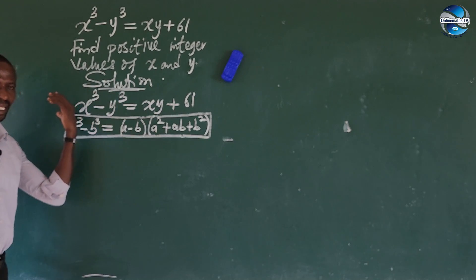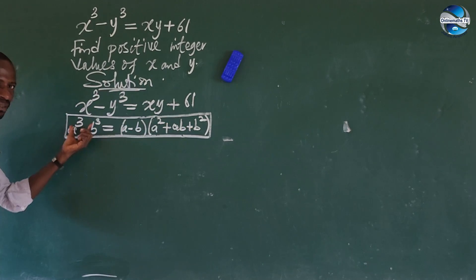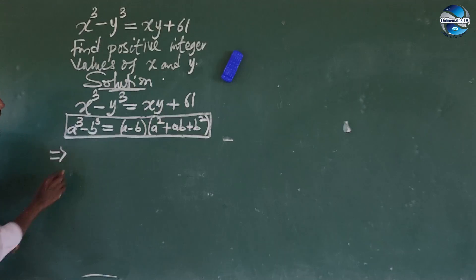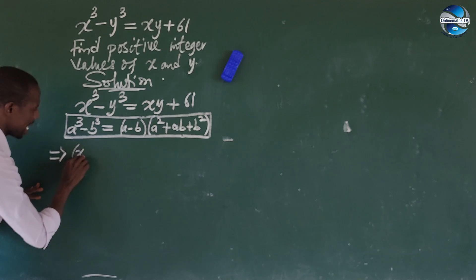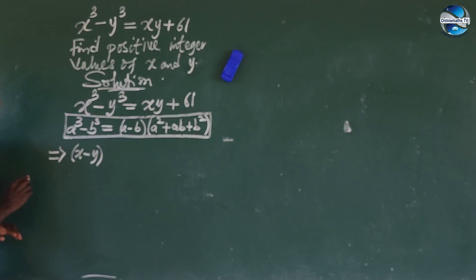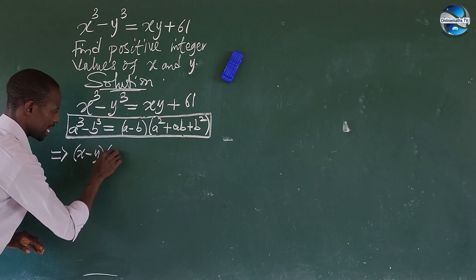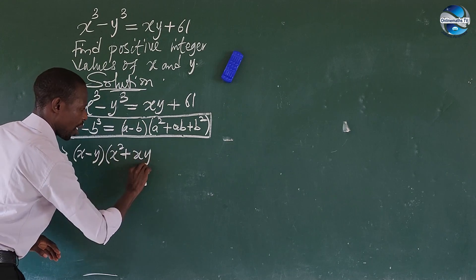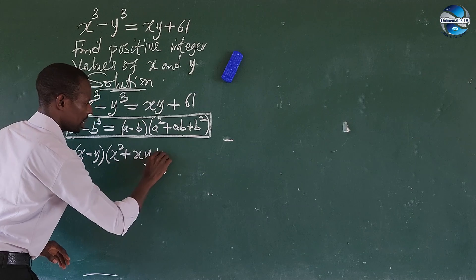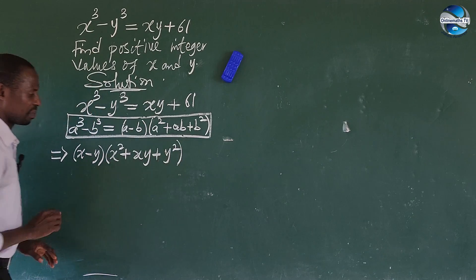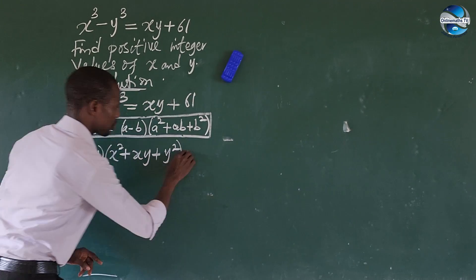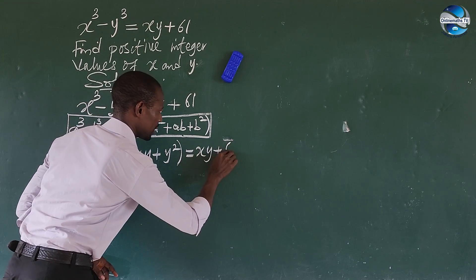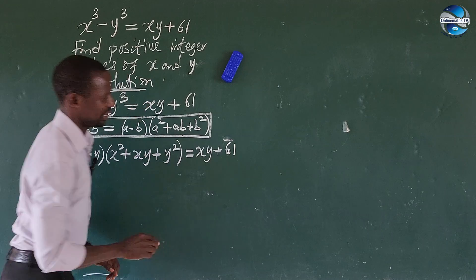The left-hand side can be written in this format because it is in this form. Writing it in this format, this implies that (x minus y)(x² plus xy plus y²) equals xy plus 61.